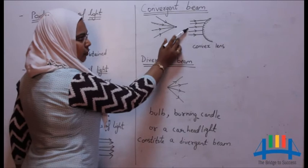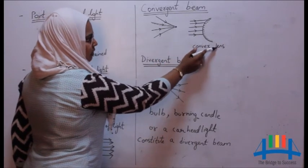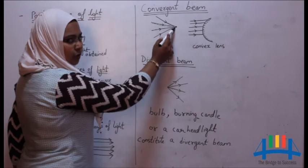When parallel beam of light is made to pass through convex lens, we get a convergent beam of light.